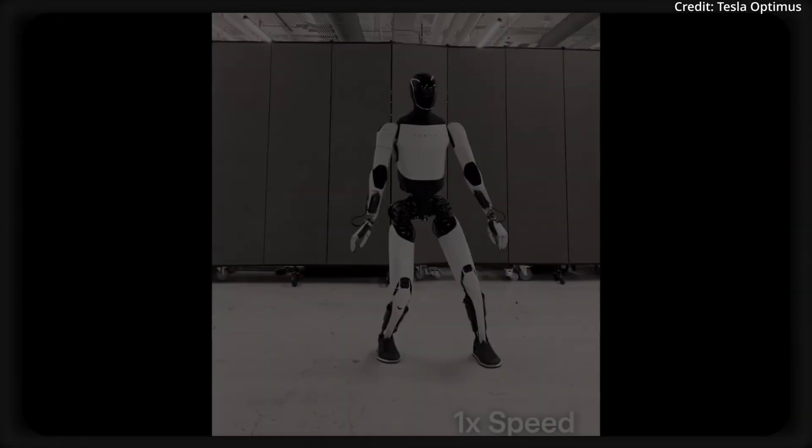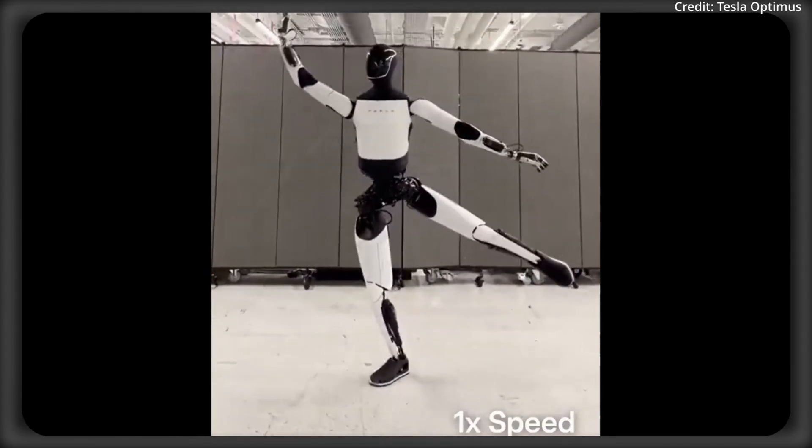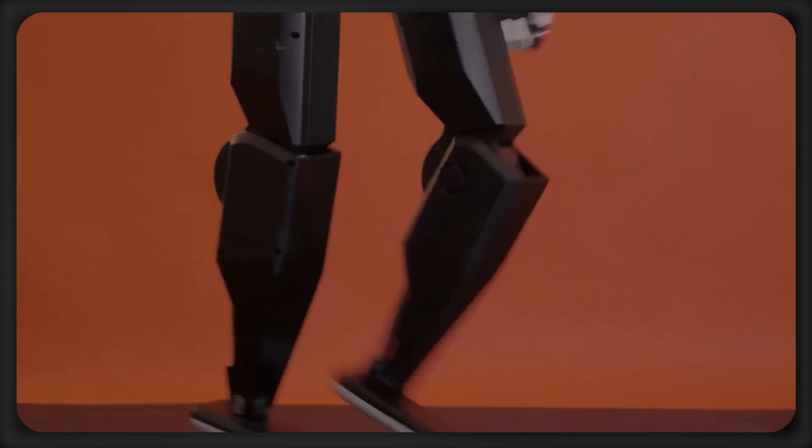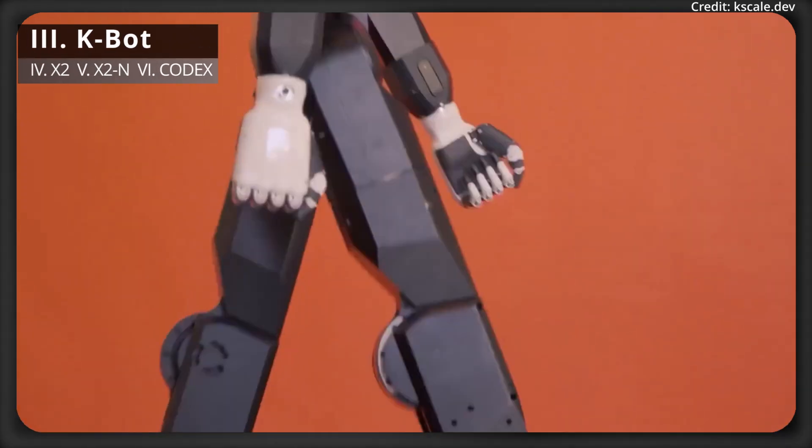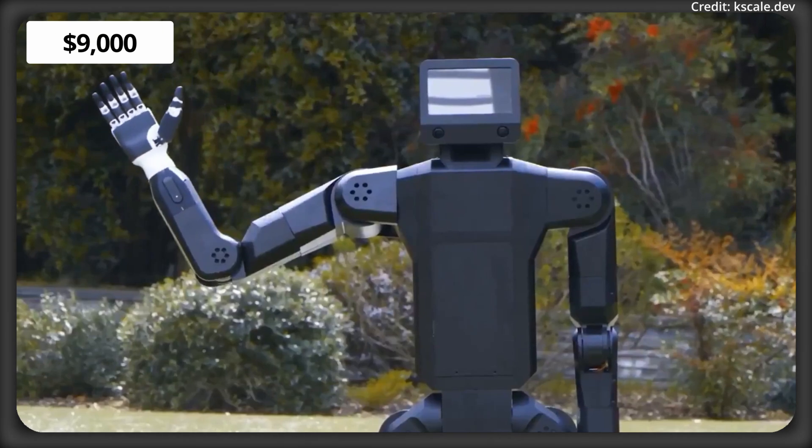And what stands out about the Optimus Gen 2 is that it features 22 degrees of freedom in its hands, and it has a target price range of between $20,000 to $30,000, with Tesla's production costs being around $10,000 per robot. But tell us in the comments whether a 3D projector built into the robot's face would be the cherry on top for the ultimate user experience. But for a more affordable robot,